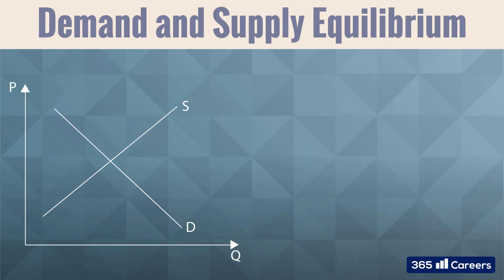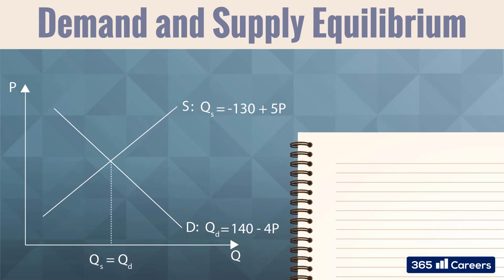If we have a simple demand function, qd equals 140 minus 4p, and a supply function, qs equals minus 130 plus 5p, we know that in equilibrium the quantity supplied equals quantity demanded. So, we need to solve the following equation. From there, we get that the equilibrium price equals 30 and the corresponding equilibrium quantity is 20.